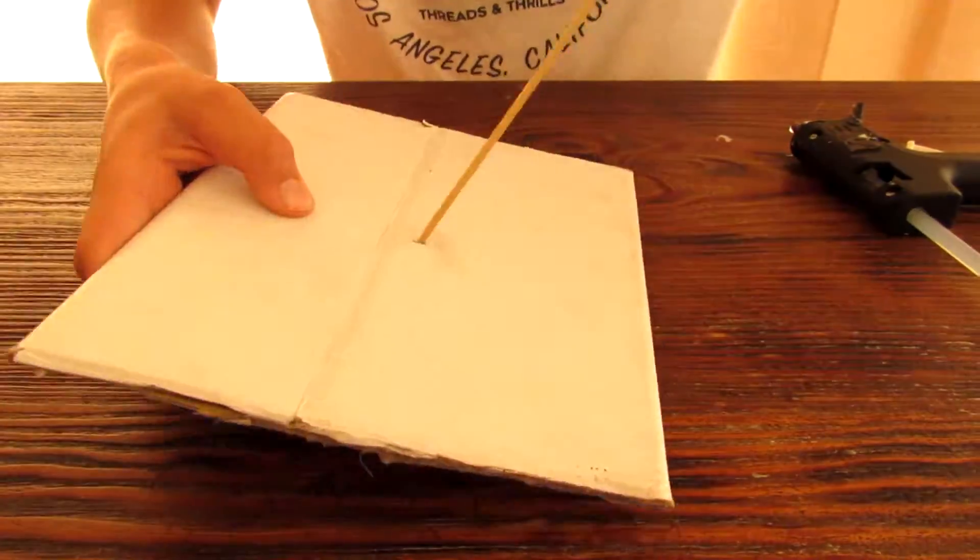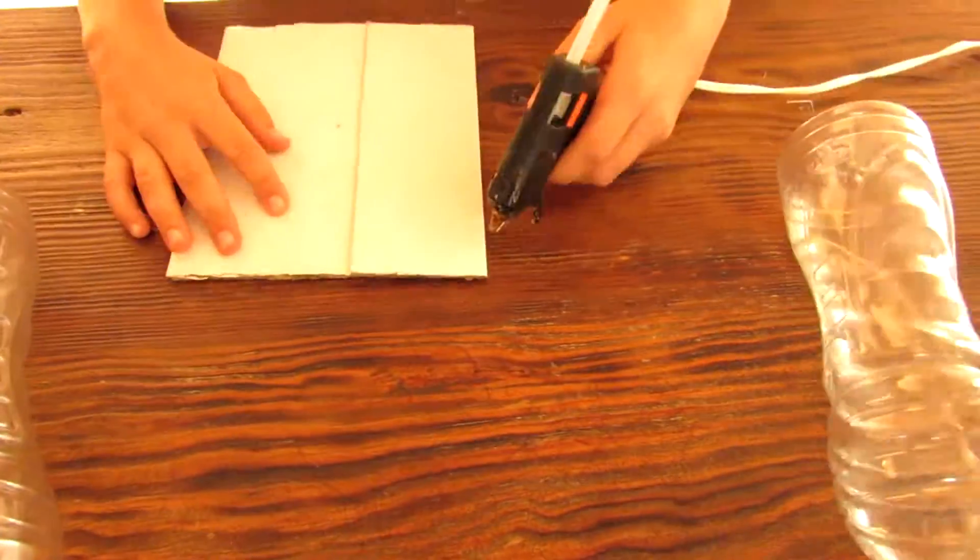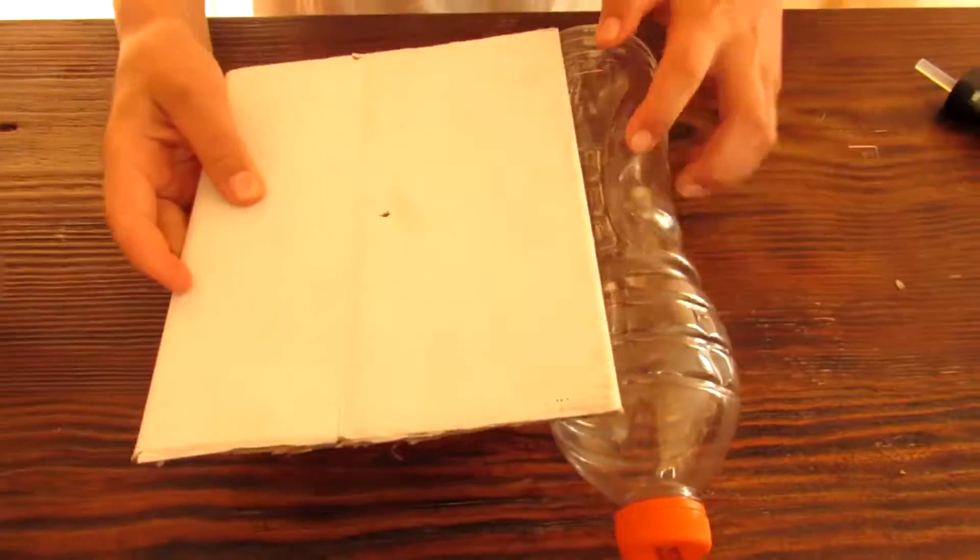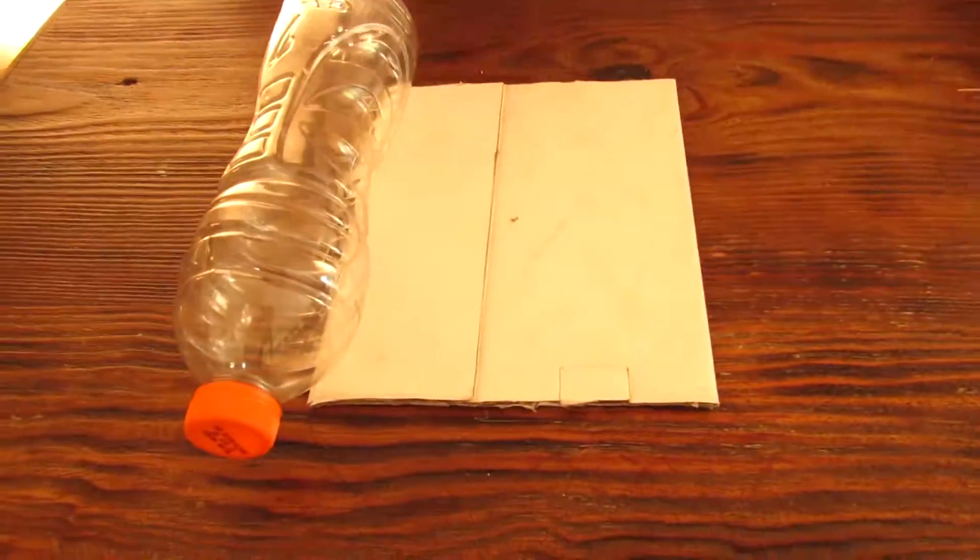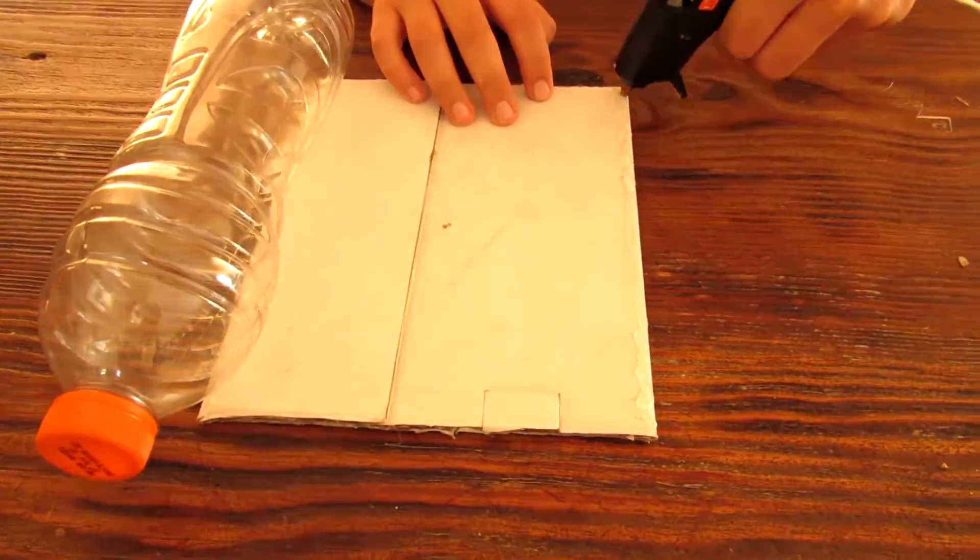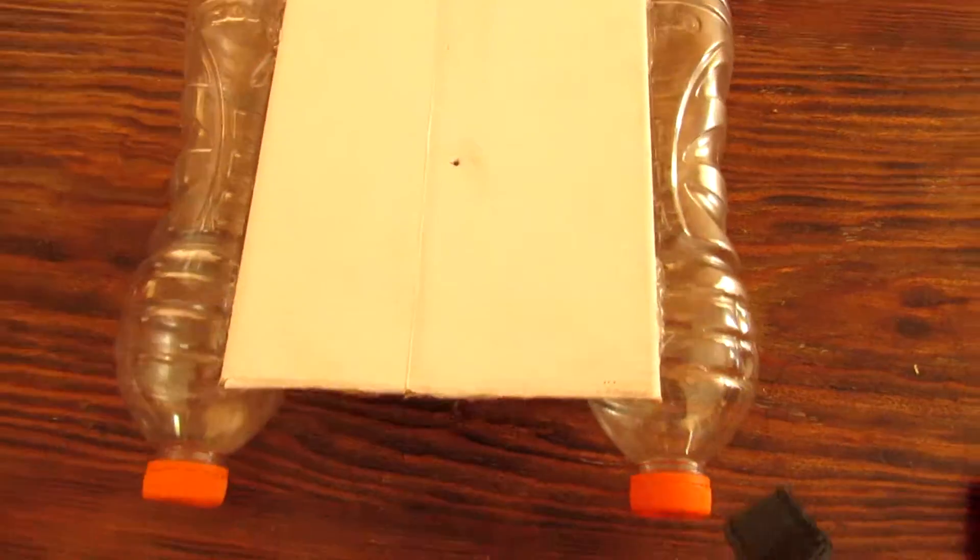Then we're going to put it on top of the bottles to see where it's going to sit. And then we're going to take some hot glue and run it down the edges of the underside of the piece of cardboard and then glue it to your bottle. Then you're going to flip it over and you're going to do the same to the other side of the piece of cardboard and put your bottle underneath it.